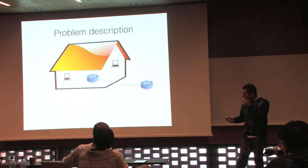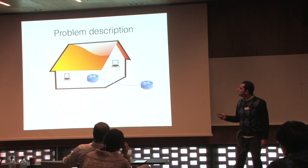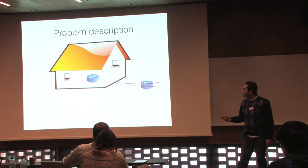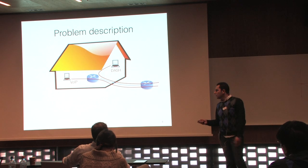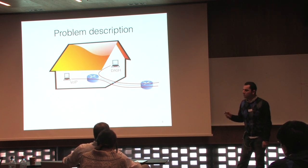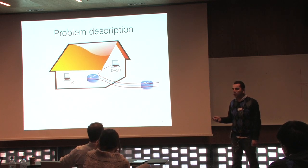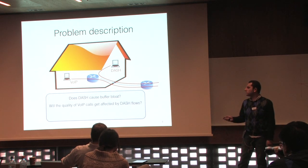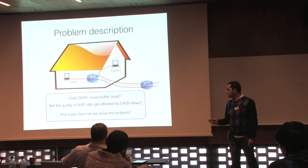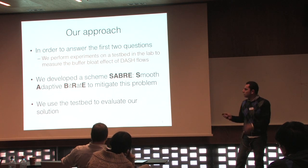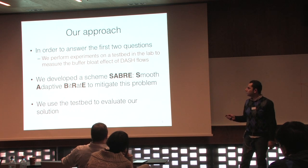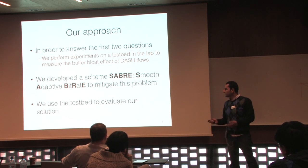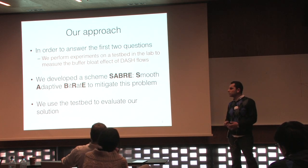In this work we look at a specific problem in a typical residential setting: you have a residential gateway connected to the internet, someone watching a DASH video, and someone doing something delay-sensitive like a VoIP call or an online video game. We ask: does DASH cause buffer bloat? Will the quality of this time-sensitive application get affected? If yes, how can we solve it? We set up a testbed in the lab, measured the buffer bloat effect of DASH flows, found it significant, and developed SABRE — Smooth Adaptive Bitrate scheme — to mitigate the problem.